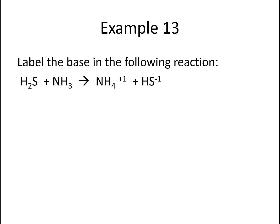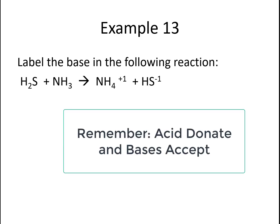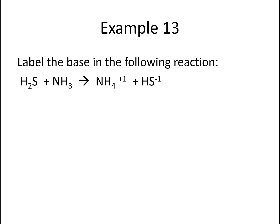In this reaction, what is acting as the base? Remember our rule — ADBA: acids donate, bases accept. So what on the reactant side is accepting a hydrogen ion? Our base will be our ammonia. On the right we have ammonium, which has one more hydrogen than ammonia. That means the hydrogen sulfide, which is H2S, gave its hydrogen to the ammonia forming ammonium. Because ammonia accepted a hydrogen, it's the base. And the H2S is the acid.